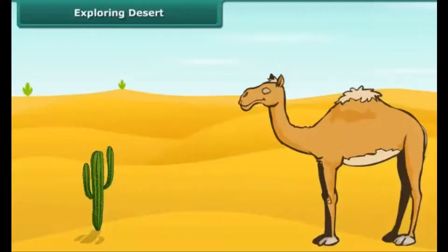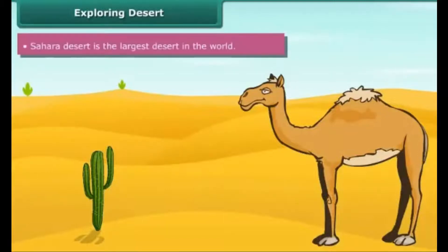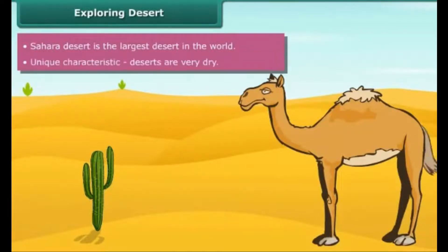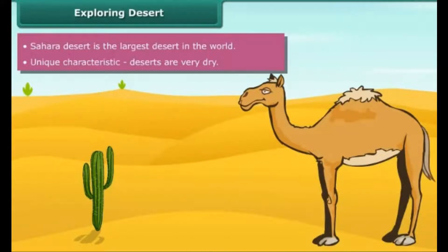Did you know that the Sahara Desert is the largest desert in the world? It is located in Africa. Deserts have a unique characteristic of being dry — they are hot and dry due to high rate of evaporation and limited rainfall. Plants and animals living in deserts have modified features to survive in such extreme conditions.